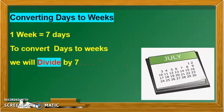Now let us do the reverse of it. That is, days are given and we have to convert to weeks. One week is seven days, and to convert days to weeks we will divide by seven.